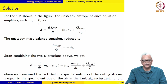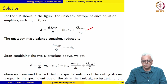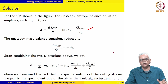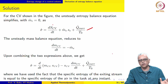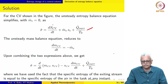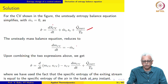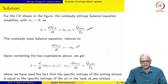For the control volume shown, the unsteady entropy balance equation applies. ṁᵢ is zero, but the dS_cv/dt term must be retained because there is a change in entropy within the control volume during the process. The unsteady mass balance, after setting ṁᵢ equal to zero, simplifies accordingly.